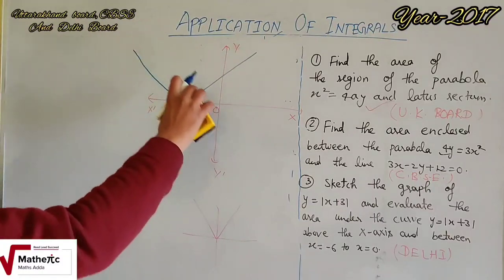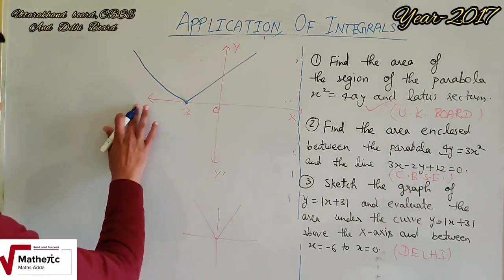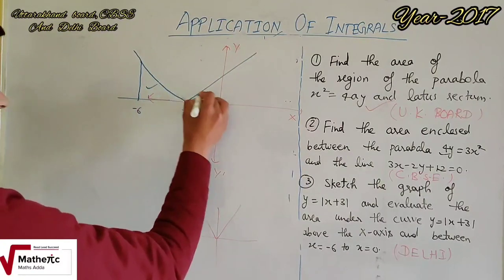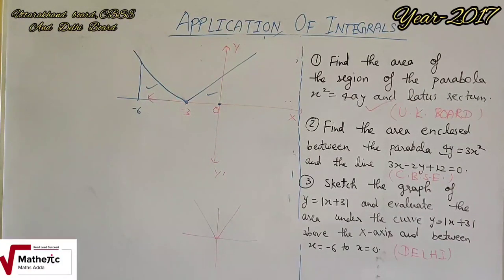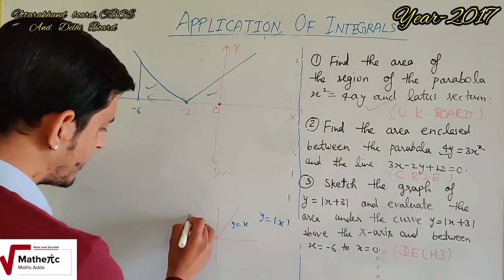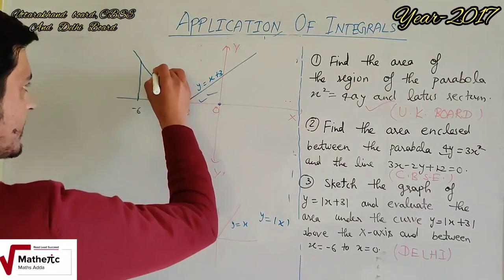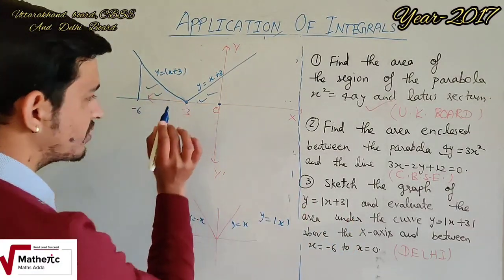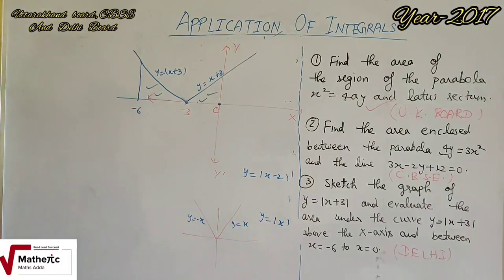Graph V shape में बनेगा, shifting -3 पर होगी। Area -6 से 0 तक निकालना है — यह दो parts में divided है। y = mod x के case में: y = x (right side) और y = -x (left side)। यहाँ y = x + 3 और y = -(x + 3) = -x - 3 होगी। अगर y = mod(x - 2) होता तो +2 पर shift होता।